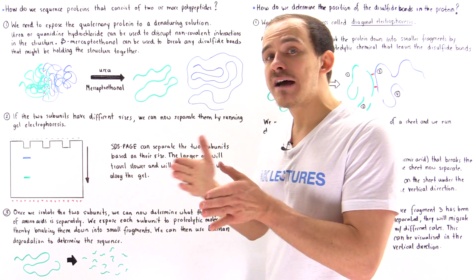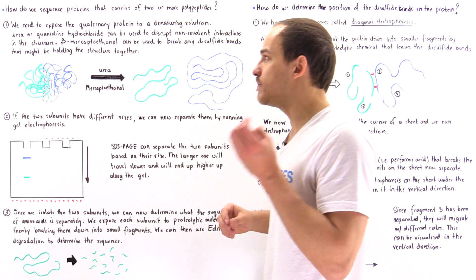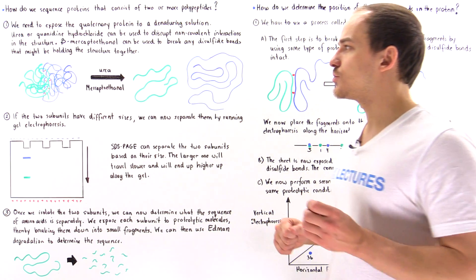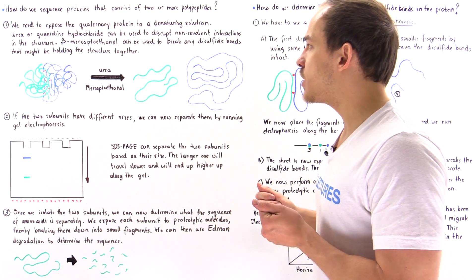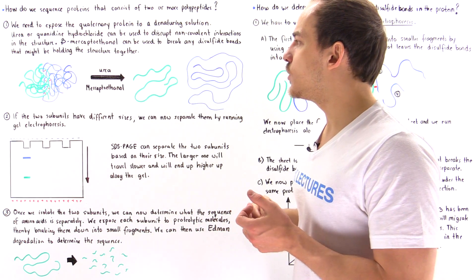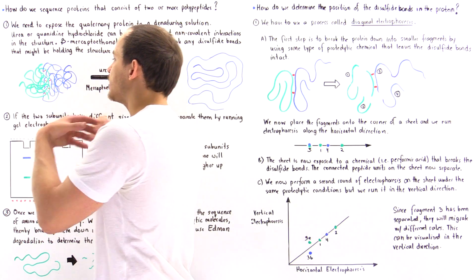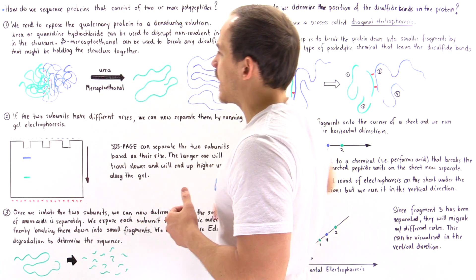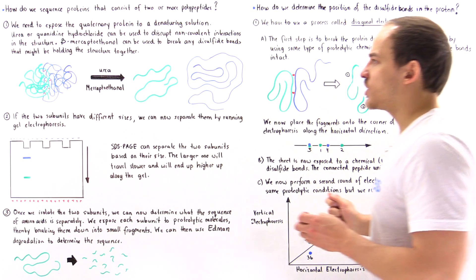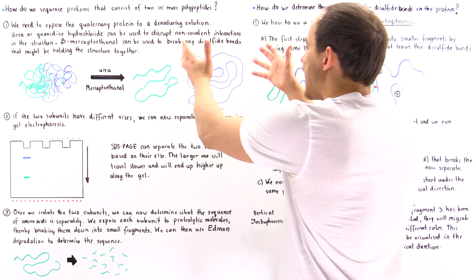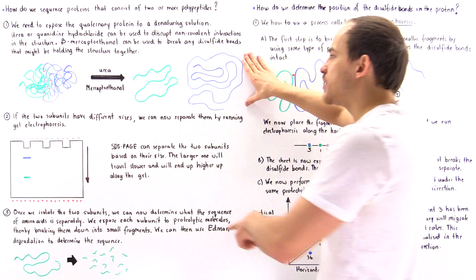And then, if we have disulfide bonds between our two polypeptide chains, we want to expose them to beta-mercaptoethanol to break down those covalent interactions. Let's suppose we're dealing with a protein that consists of two individual subunits — two polypeptide chains. We have the green one and we have the blue one, and these red lines are basically our disulfide bonds. If we take this protein and place it into a solution that contains urea and beta-mercaptoethanol, we're going to denature the structure and separate these two polypeptide chains into a mixture of the green and the blue individual chains. Notice that in this example, the blue one is greater in size than our green one.